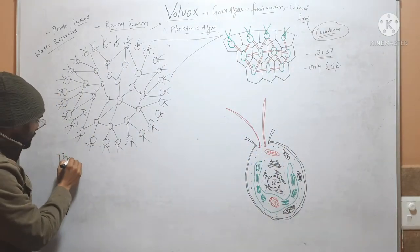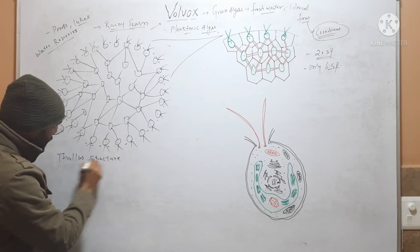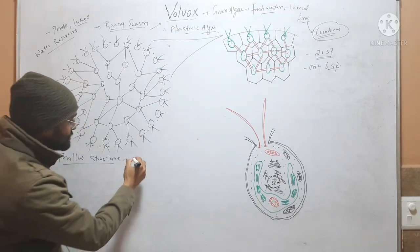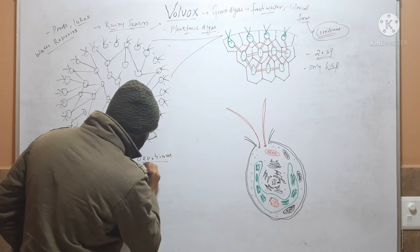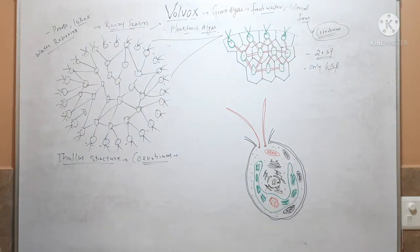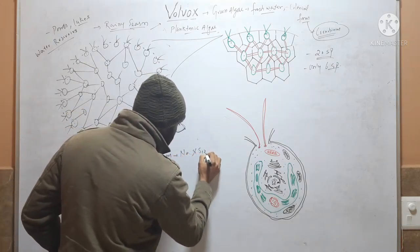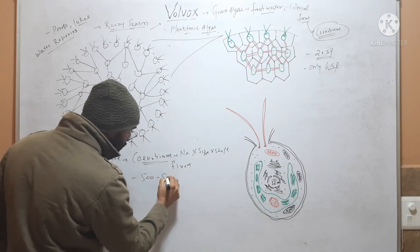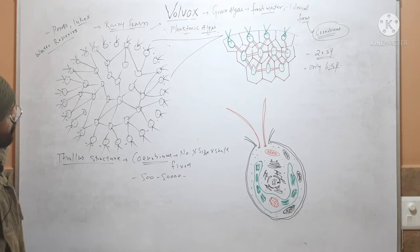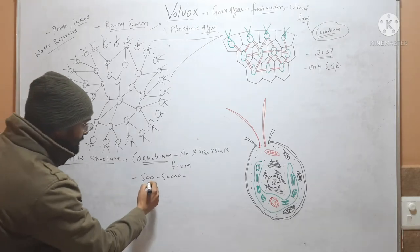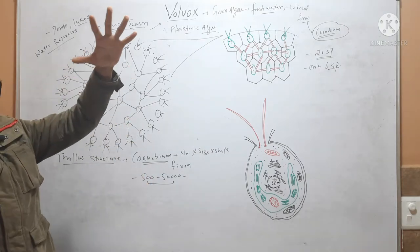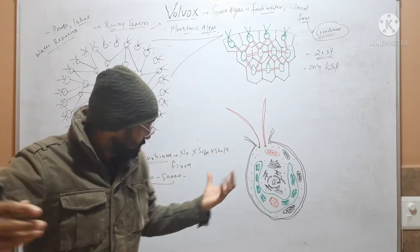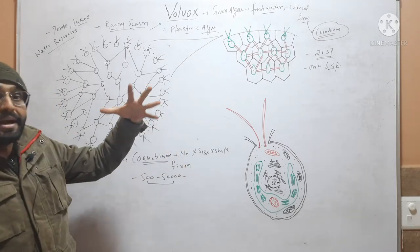Coming to thallus structure: Volvox is found in a special type of colony called a coenobium, where the number, size, and shape of the colony is fixed. The number of cells may vary from 500 to 50,000, varying from species to species and colony to colony. All these cells are present in a gelatinous matrix, and in this common gelatinous matrix 500 to 5,000 cells are embedded.